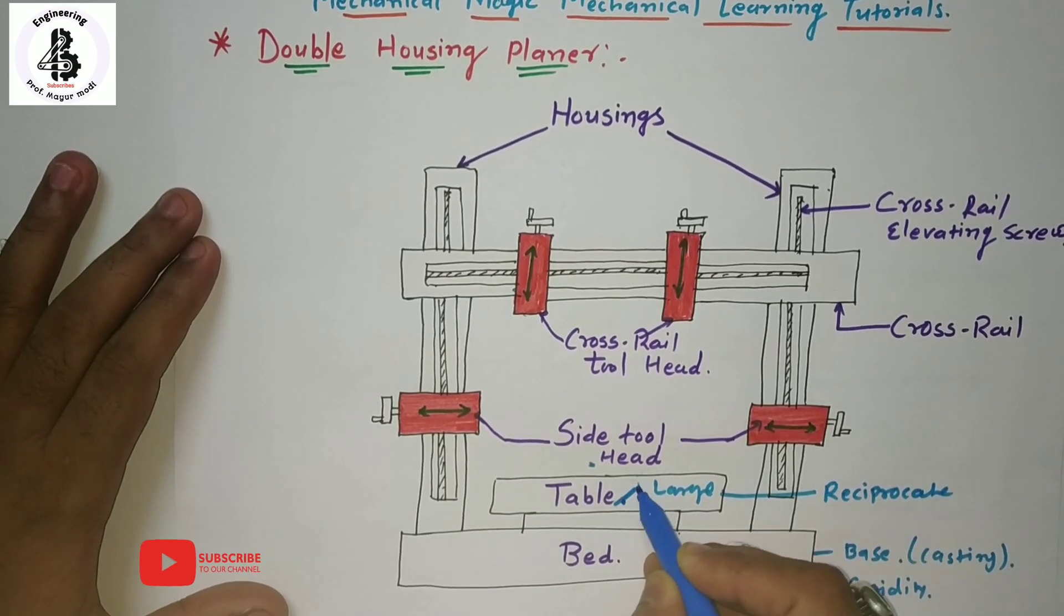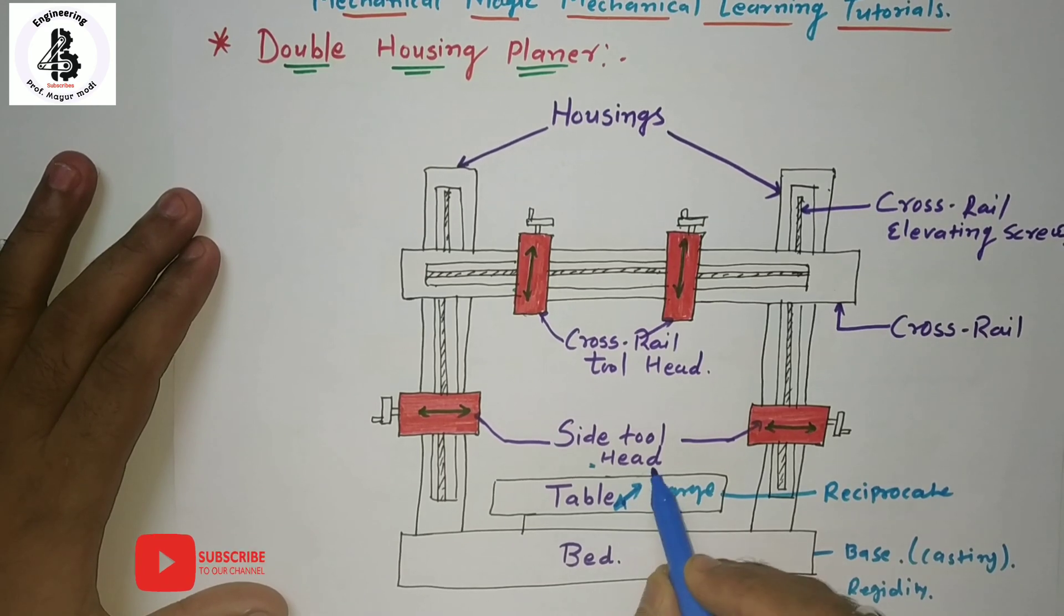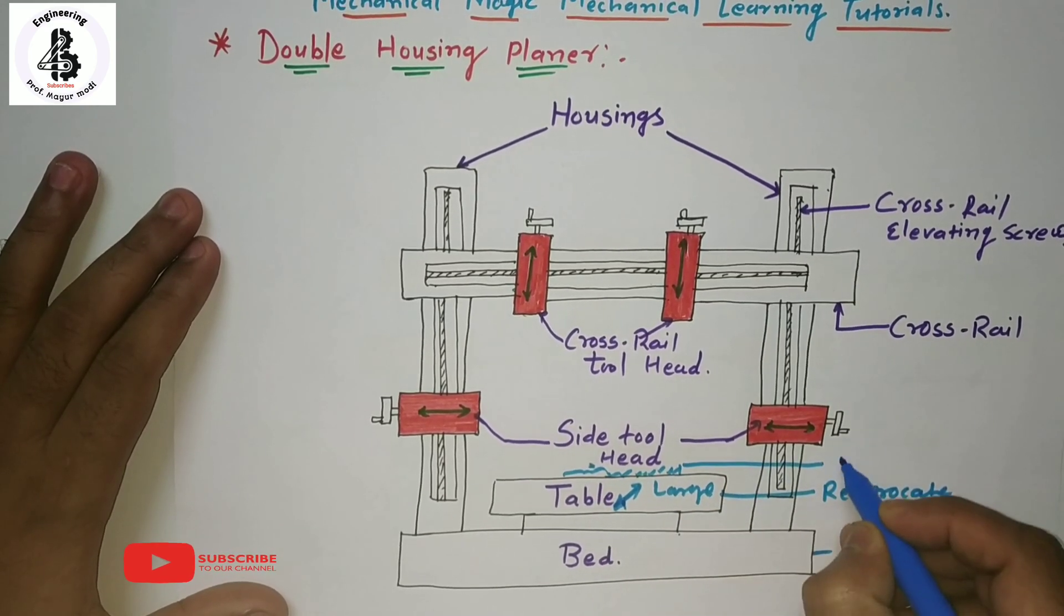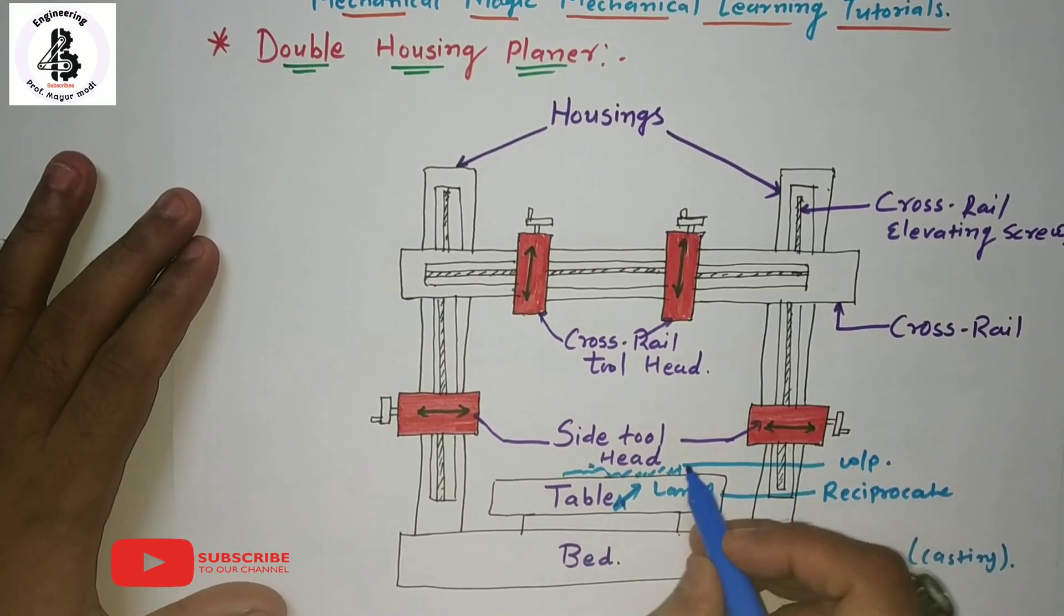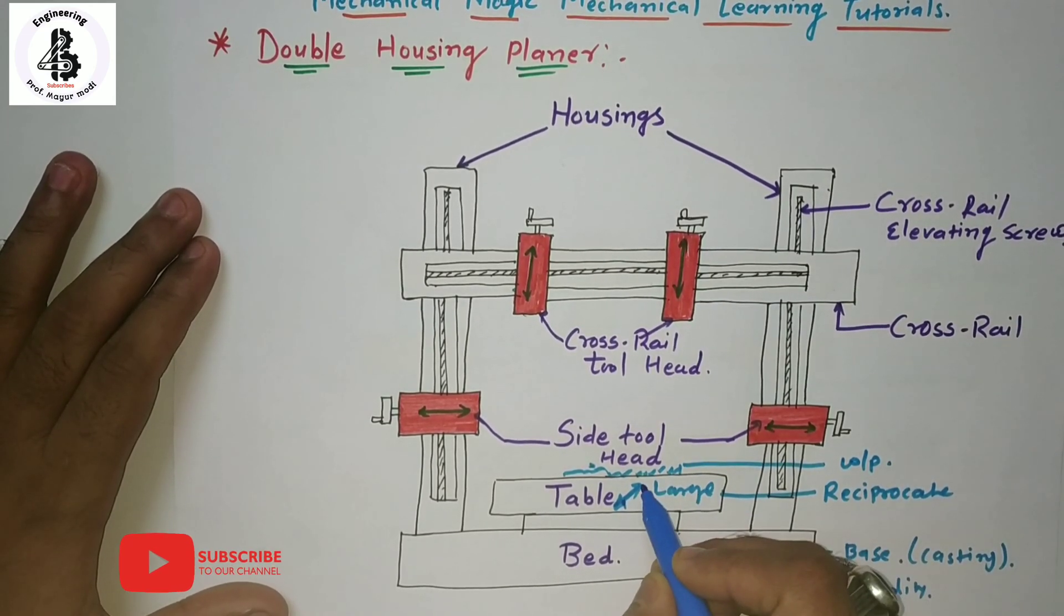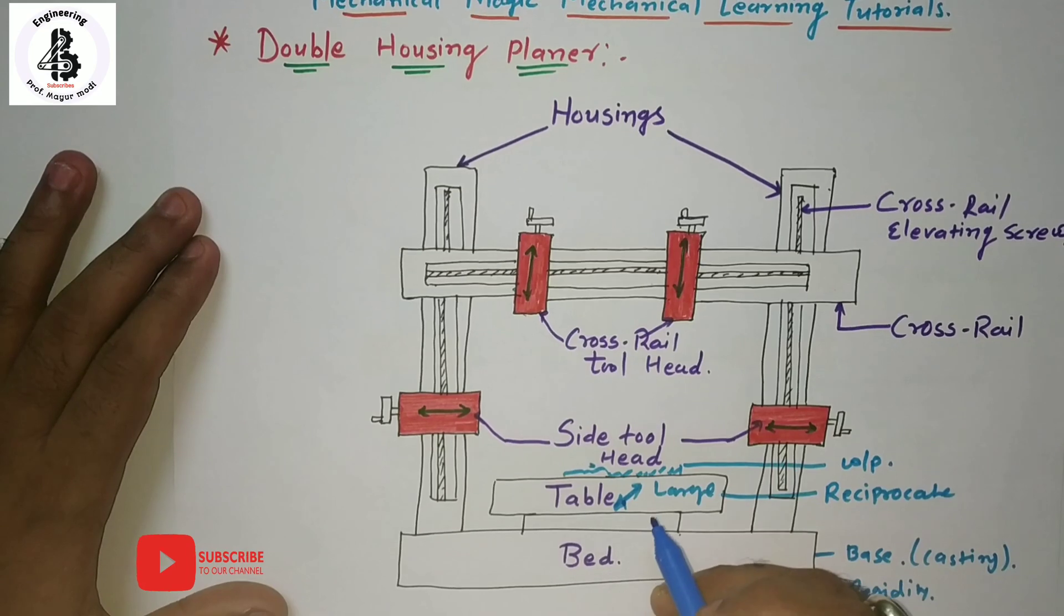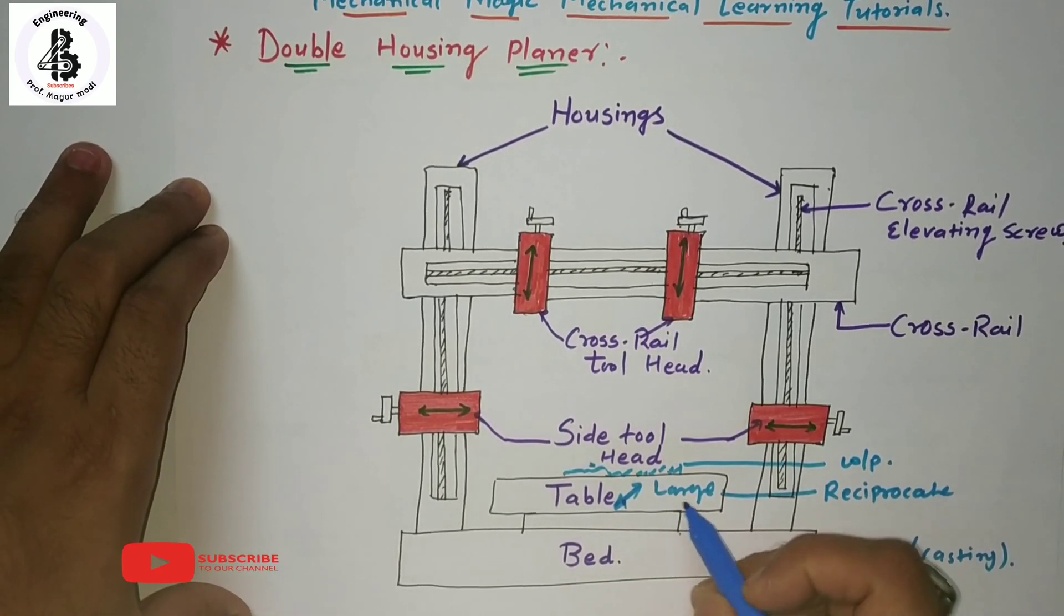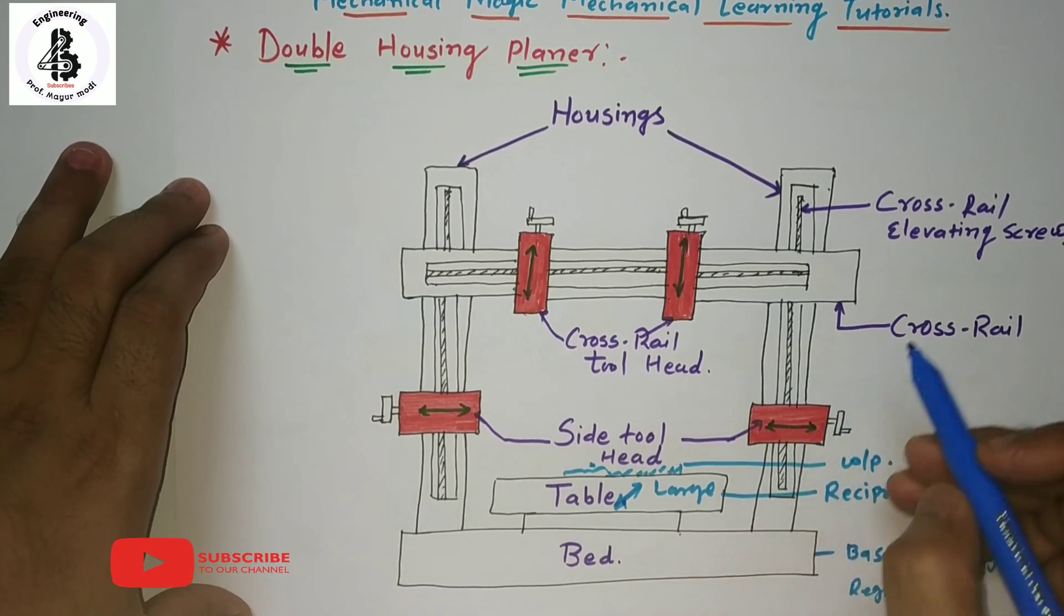On to the table, our workpiece will be fixed. So the workpiece will be held onto the table and the table is being reciprocating. As you can see, there are two more things.